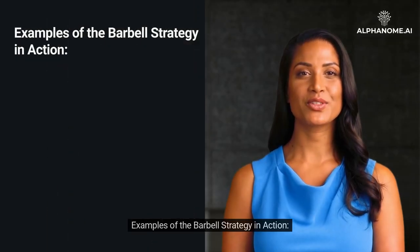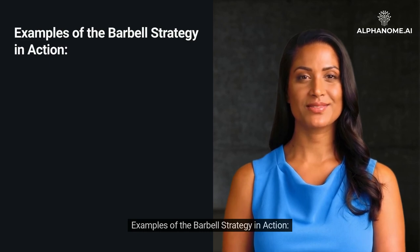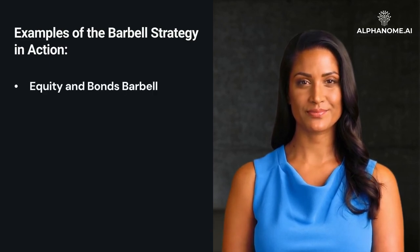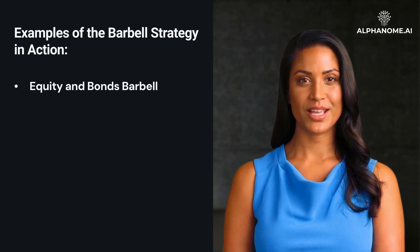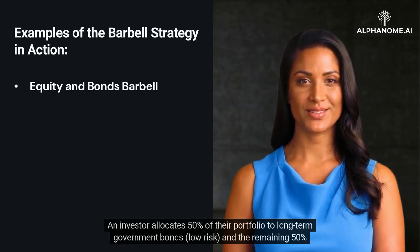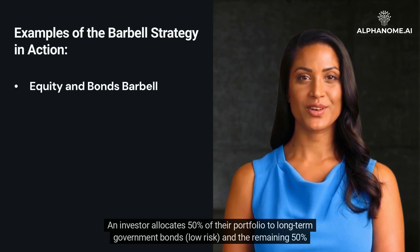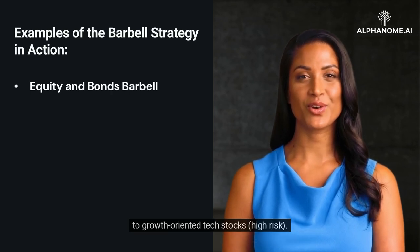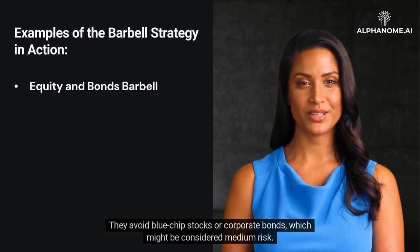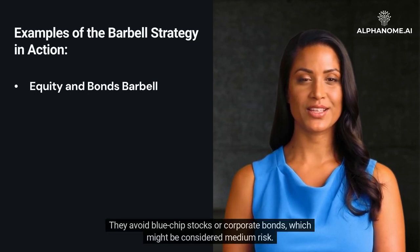Examples of the Barbell Strategy in Action. Equity and Bonds Barbell: an investor allocates 50% of their portfolio to long-term government bonds (low-risk) and the remaining 50% to growth-oriented tech stocks (high-risk). They avoid blue-chip stocks or corporate bonds, which might be considered medium-risk.